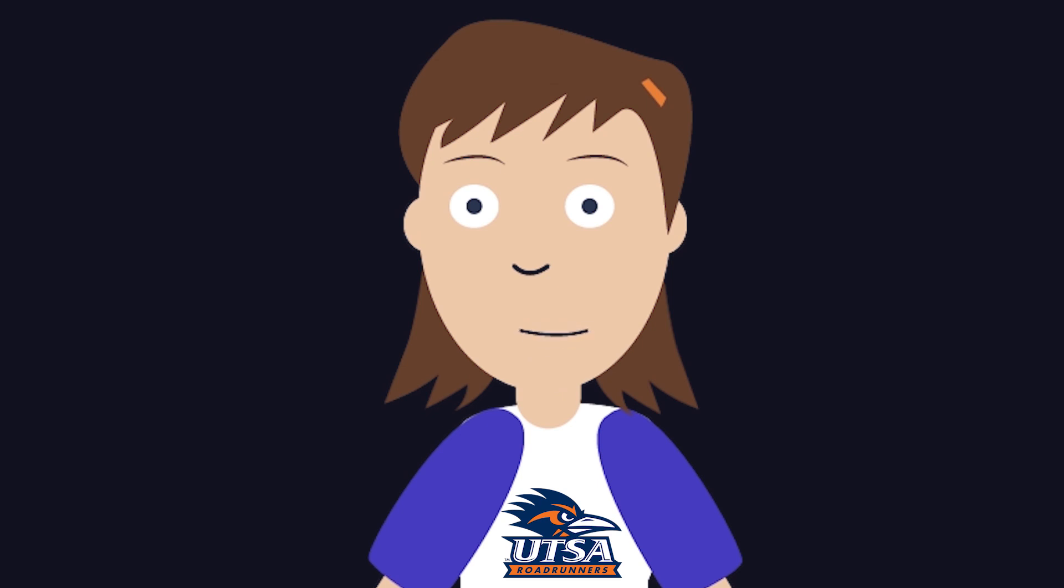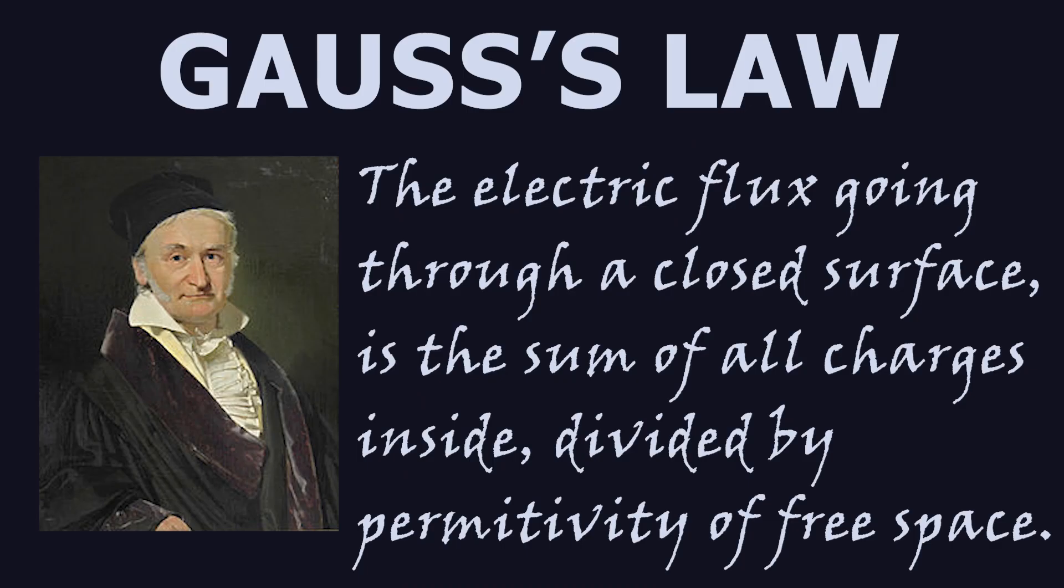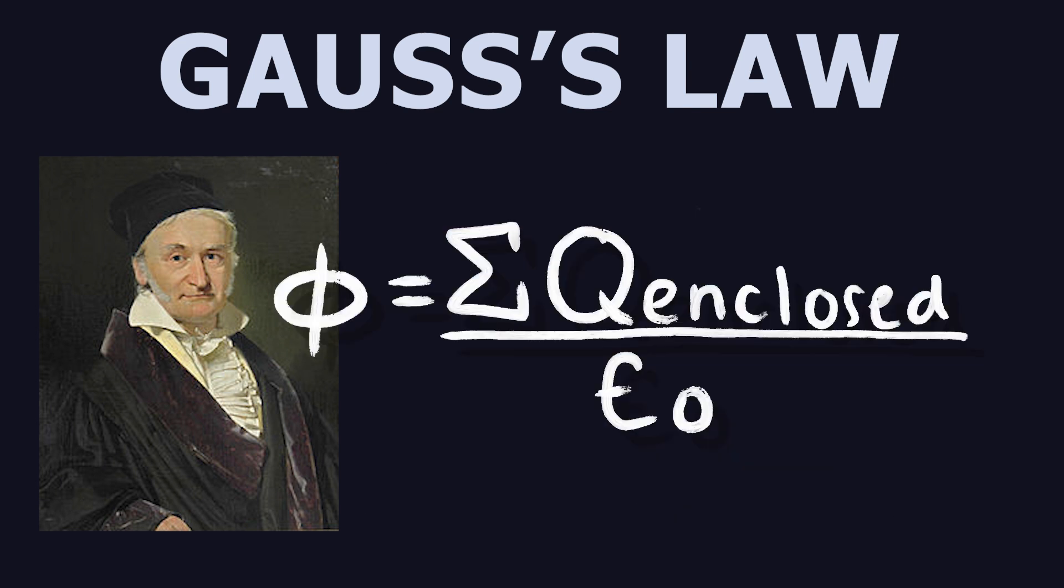Now let's talk about Gauss's law. Gauss's law states that the electric flux going through a closed surface is the sum of all the charges inside divided by the permittivity of free space. Or we can summarize this into the formula: Φ equals the sum of Q enclosed over epsilon naught.